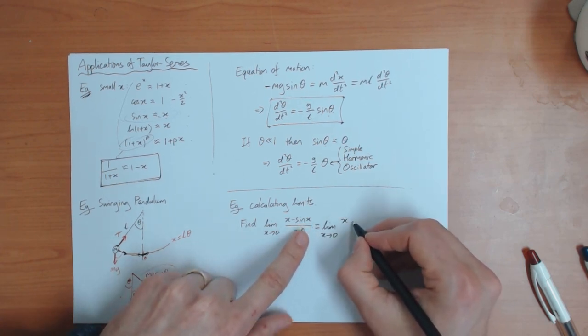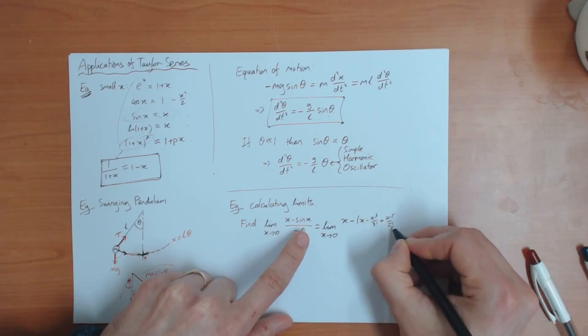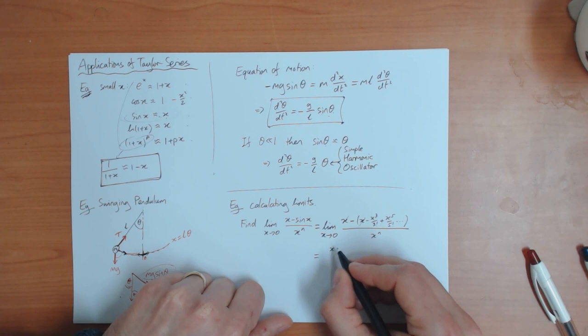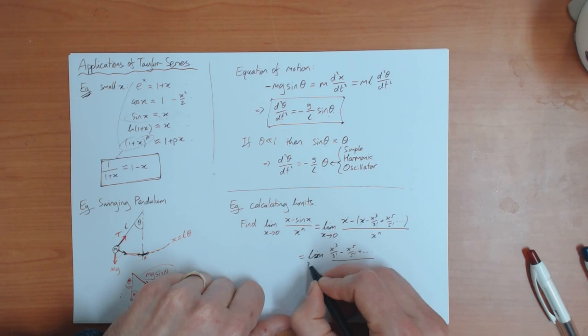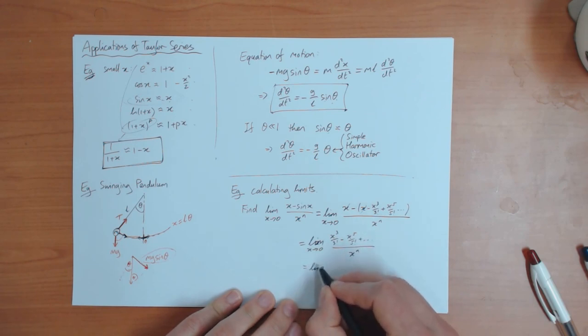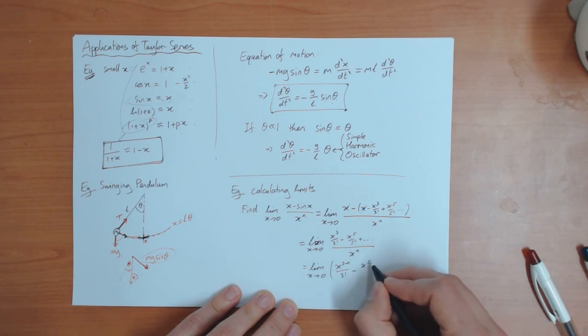So here I need the Taylor series of sine, which is x minus x cubed over 3 factorial plus x to the 5 over 5 factorial and so on. So you see that the x's cancel here. So the first term is x cubed over 3 factorial minus x to the 5 over 5 factorial plus dot to dot. So this limit should still be there. Divided by x to the power n. So now I can divide each term by x to the power n. So this is limit x goes to zero of x to the 3 minus n over 3 factorial minus x to the 5 minus n over 5 factorial and so on.